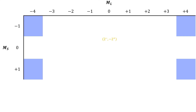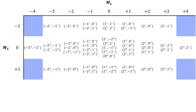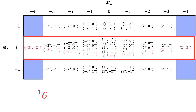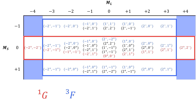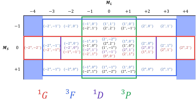This leaves one lonely microstate that will be its own atomic state. It has ML = 0 and MS = 0, making it a singlet S atomic state. The distribution of microstates for each atomic term symbol is: 9 singlet G microstates, 21 triplet F microstates, 5 singlet D microstates, 9 triplet P microstates, and 1 singlet S microstate.